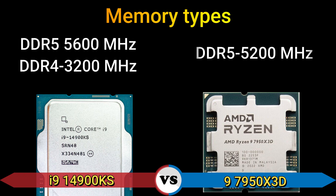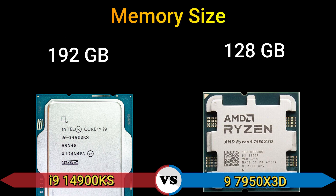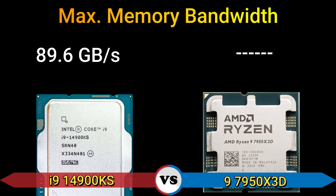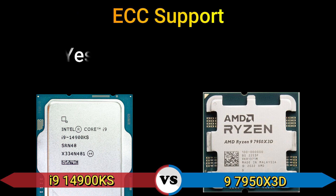Part 4: Memory. Memory types: DDR5 5600 MHz, DDR4 3200 MHz, and only DDR5 5200 MHz. Memory size: 192 GB and 128 GB max. Memory channels: 2. Max memory bandwidth: 89.6 GB/s. ECC support: yes.